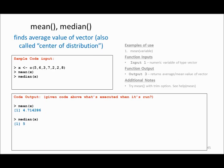There are some statistical functions you can use in R, for example mean and median. If I have data in a variable x, I can calculate the mean and median of x. The mean, or average, of my data in x is 4.7, and the median of the data stored in x is 5.